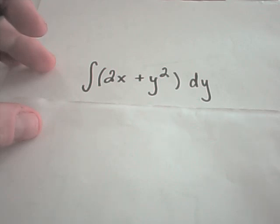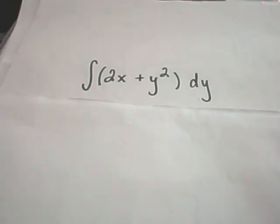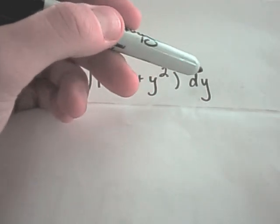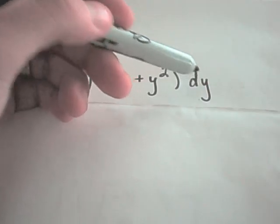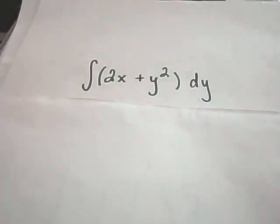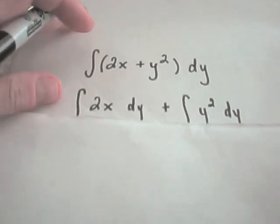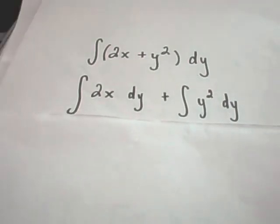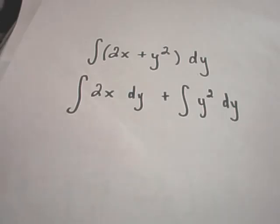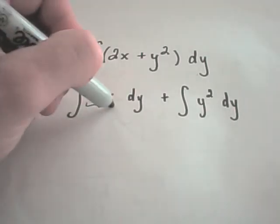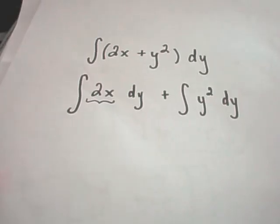When you do these problems, it's a lot like taking partial derivatives. Depending on what thing you're integrating with respect to, we're integrating with respect to y, we're going to treat x's as constants. The first thing I did is just bust this up, and you don't have to do this. You can do it all in one step. But now the idea is, since I'm integrating with respect to y, 2x is just like a constant.